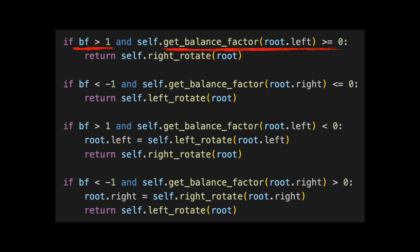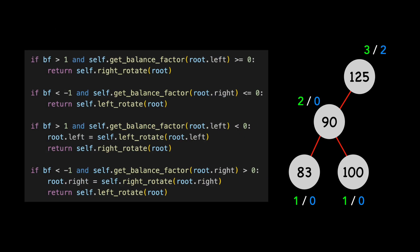I'll draw in the subtree of interest, and let's run through the logic. Our balance factor is 2, so this first condition is met. The balance factor of its left child is 0, so both conditions in the first if block are true. We need to perform a right rotation.